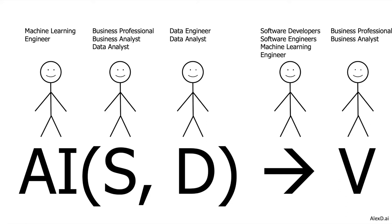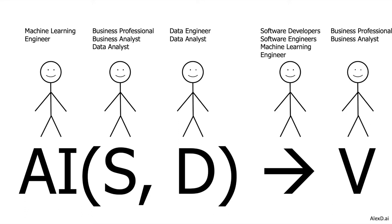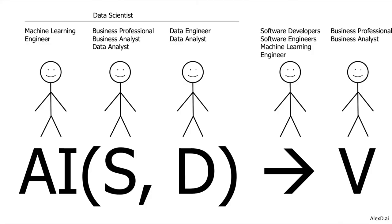There are also other enablers: software engineers and sometimes machine learning engineers who help take what has been built and put it into production. It is only when something is in production — with access to real-world data — that we can get real value. Software engineers, software developers, and machine learning engineers are responsible for that phase of taking a model and putting it into production.